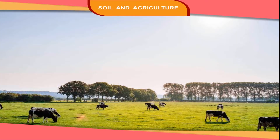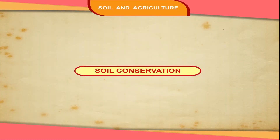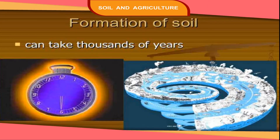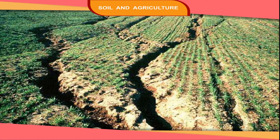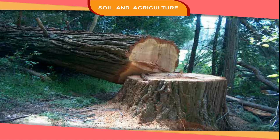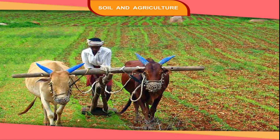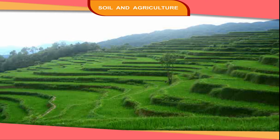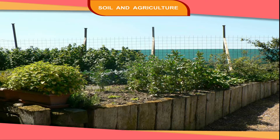Soil formation takes hundreds of thousands of years, but it takes much less time to wear away, so we must protect it from soil erosion. More plants should be grown to hold the soil together. Cutting down of trees should be checked. Fields should be cultivated regularly using crop rotation. Step farming should be used in hilly areas, and hedges should be grown around farmlands to protect the topsoil from being blown away by strong winds.